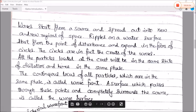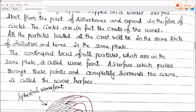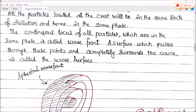The continuous locus of all particles which are in the same phase is called wavefront. A surface which passes through these points and completely surrounds the source is called wave surface. As we seen in the video, the continuous locus of all the particles which are in the same phase is called wavefront. A surface which passes through these points and completely surrounds the source is called wave surface.